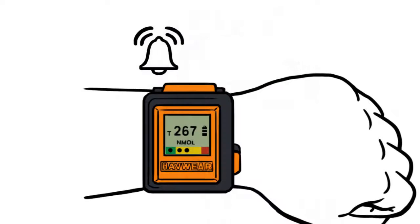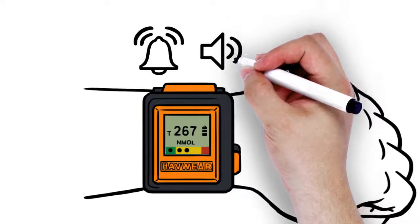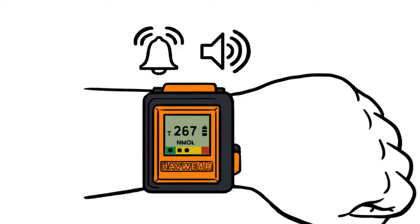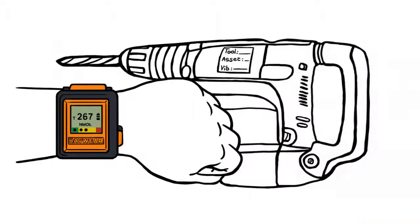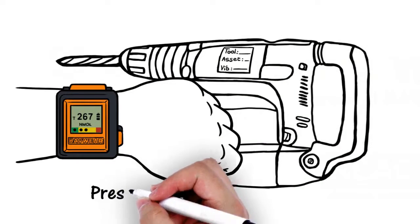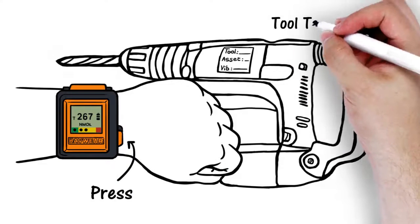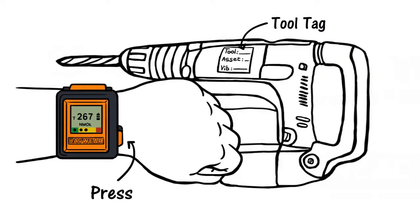Sound and vibration alerts also inform the wearer of incremental increases in exposure. To track which tools are exposing operators to vibration, simply press the Havware button and hold it next to a Havware tool tag. The Havware will then log which tool is being used, detect when the tool is being used, and for how long. It's that simple.